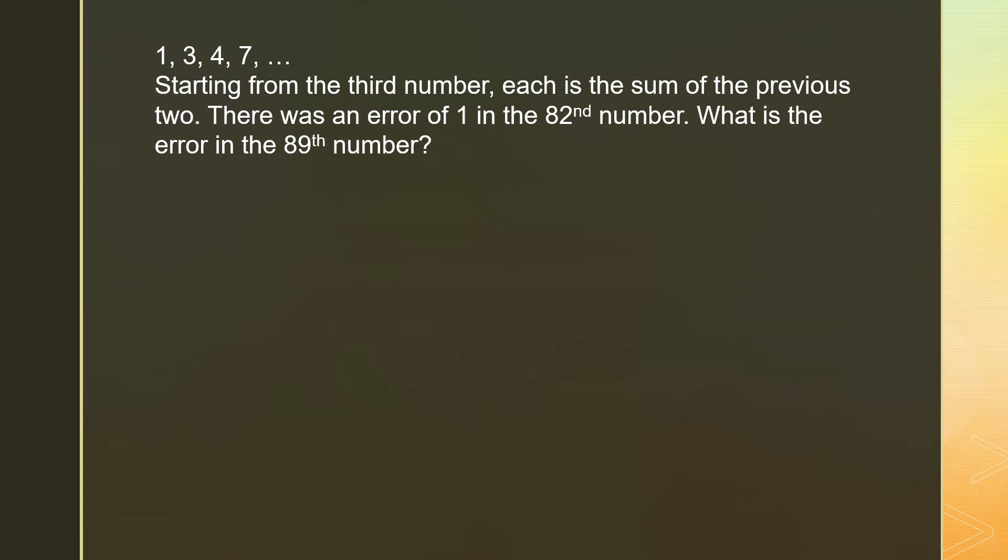Starting from the third number, each is the sum of the previous two. There was an error of one in the 82nd number. What is the error in the 89th number?